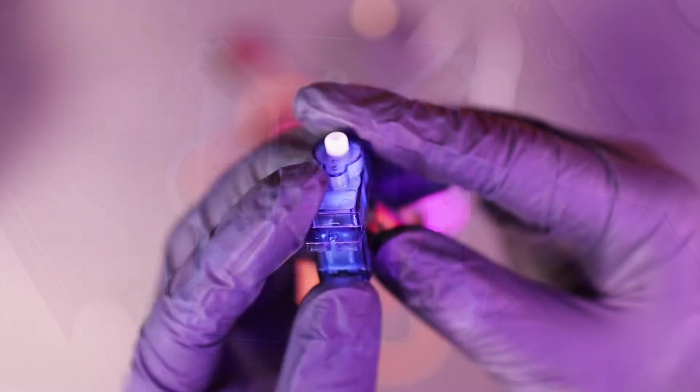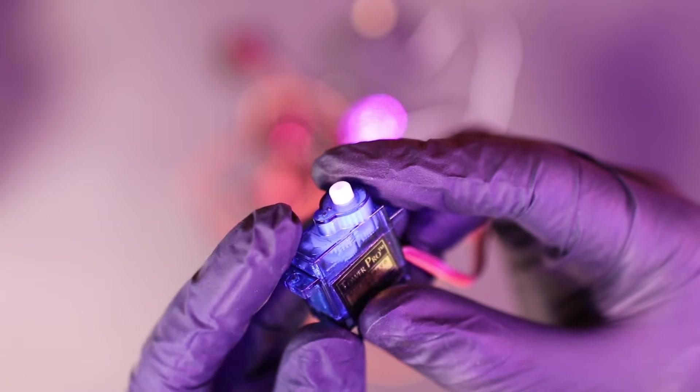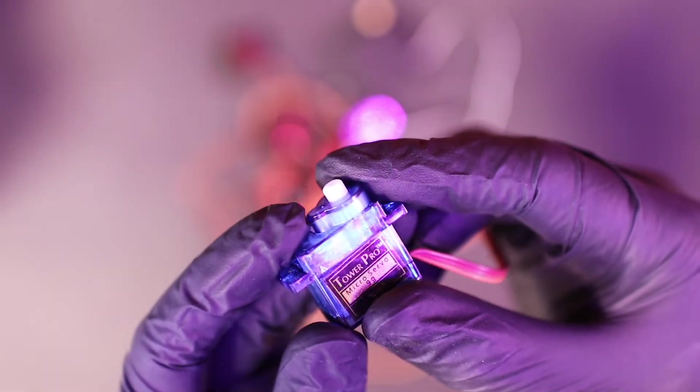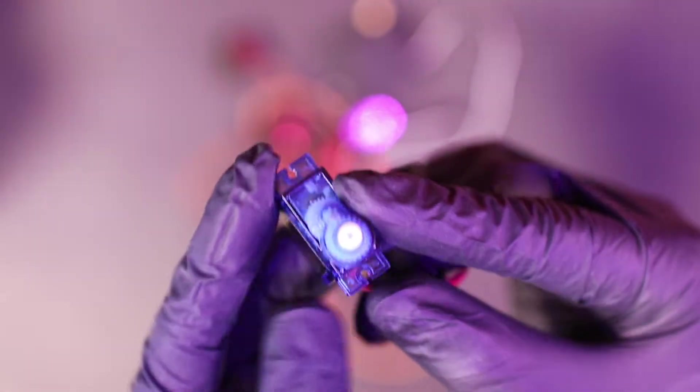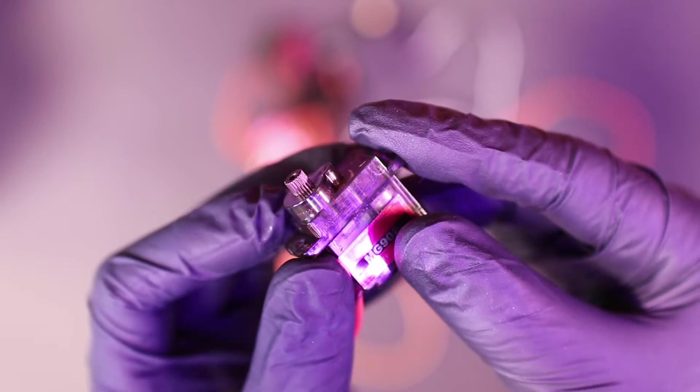In version 1, I used SG90 servos. SG90 uses plastic gears. I think it's somewhat underpowered in version 1. In version 2, I decided to use MG90S instead, which has metal gears and works more powerfully.